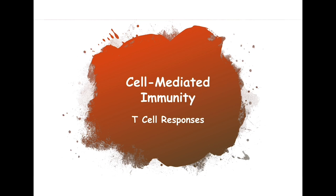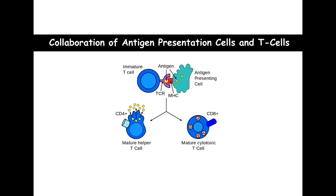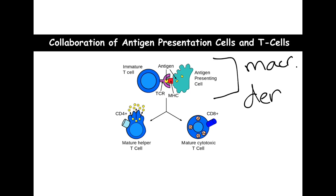Let's get started with our cell-mediated immunity. Remember, the cell-mediated immunity is talking about our T cell responses. Before, in the first lecture when we spoke about the innate, there were some specific cells called antigen-presenting cells — those include the macrophages and the dendritic cells. They have on their surfaces MHCs — major histocompatibility complexes — which are like ID cards.